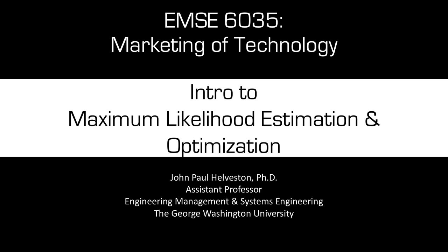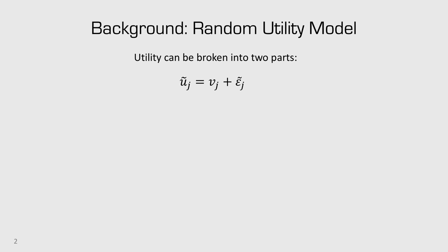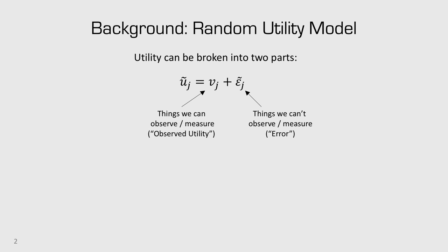This is the introduction to maximum likelihood estimation and optimization. From last time we talked about random utility models which can be broken into two parts: things we can observe and things we can't observe — the error term.